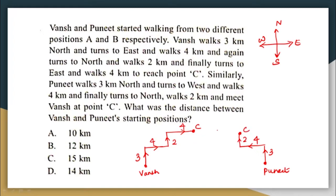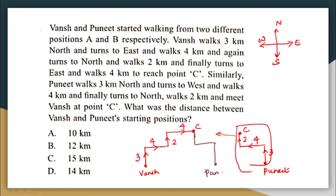Both of them are meeting at point C, so I am going to join both of these people. Basically, Puneet's diagram has to come here so that it meets at point C correctly. So this is the path that Puneet has followed, and this was his starting point. He is travelling 3 km north, then travels west 4 km, and then travels 2 km north and meets Vansh.